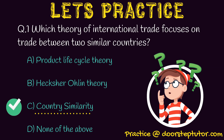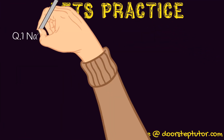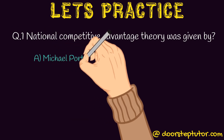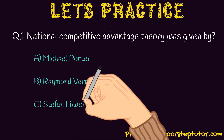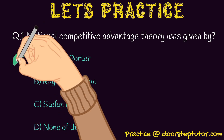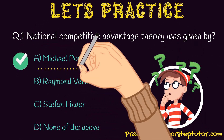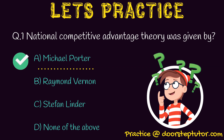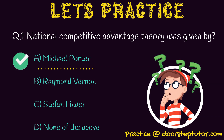The next question is: National Competitive Advantage Theory was given by — A. Michael Porter, B. Raymond Vernon, C. Stephen Linder, D. None of the others. We discussed that the National Competitive Advantage Theory was given by Sir Michael Porter. So the correct answer is option A, Sir Michael Porter. So these were all the modern theories of international trade: Country Similarity Theory, Product Life Cycle Theory, Global Strategic Rivalry Theory, and Porter's National Competitive Advantage. Hope you got the theories well. Thank you so much for your time.